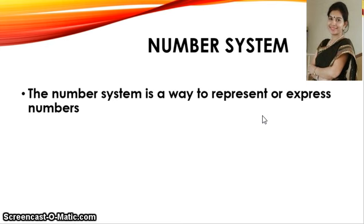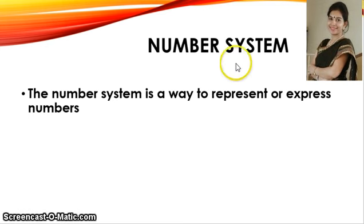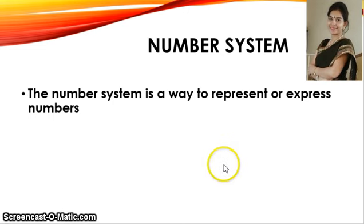We use digits like 0, 1, 2, 3, 4, 5, 6, 7, 8, and 9. The basic mathematical calculations we do use these 10 different digits, and this type of number system is the decimal number system. Broadly, number systems can be divided into two types: the non-positional number system and the positional number system.